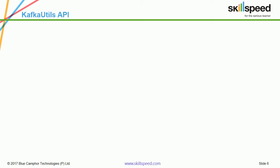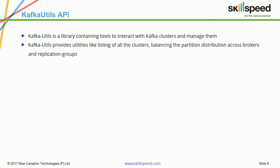Kafka provides the Kafka Utilities API, which is a set of libraries containing tools to interact with Kafka clusters. This Kafka Utilities API will allow you to list the cluster, balance the partition, check for available partitions and check for distributions, replicas, and so on. When we are using the Spark Streaming application, we will be using the Kafka Utilities API to connect to the Kafka cluster.